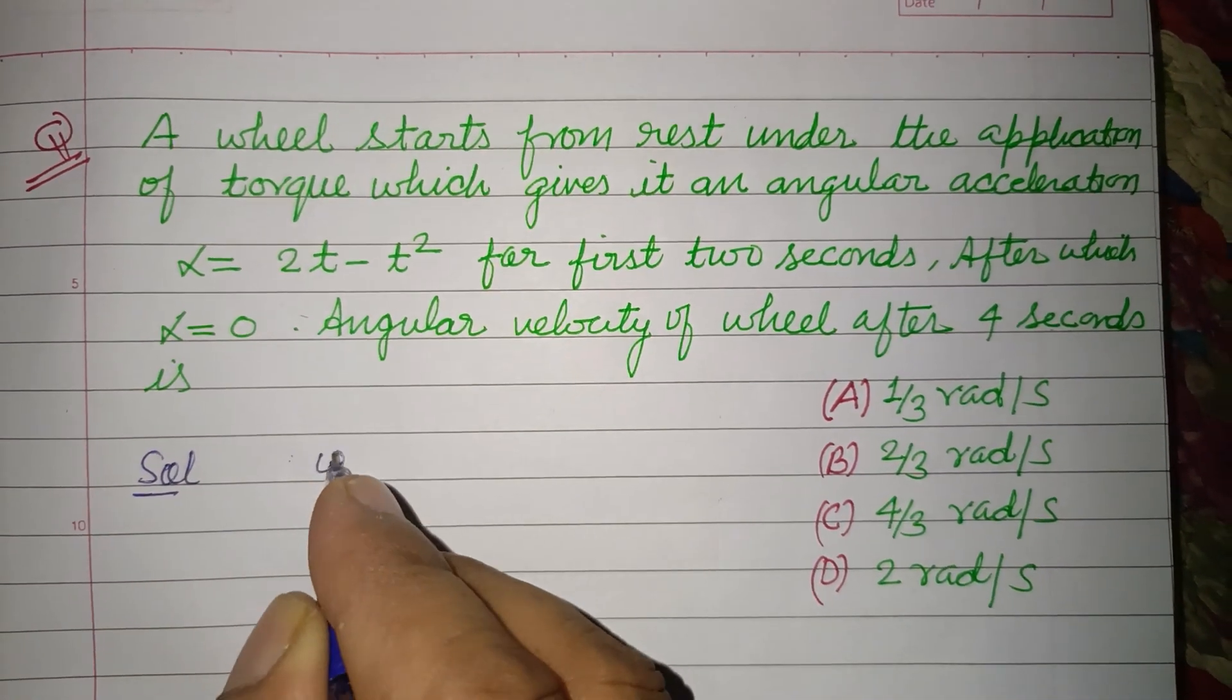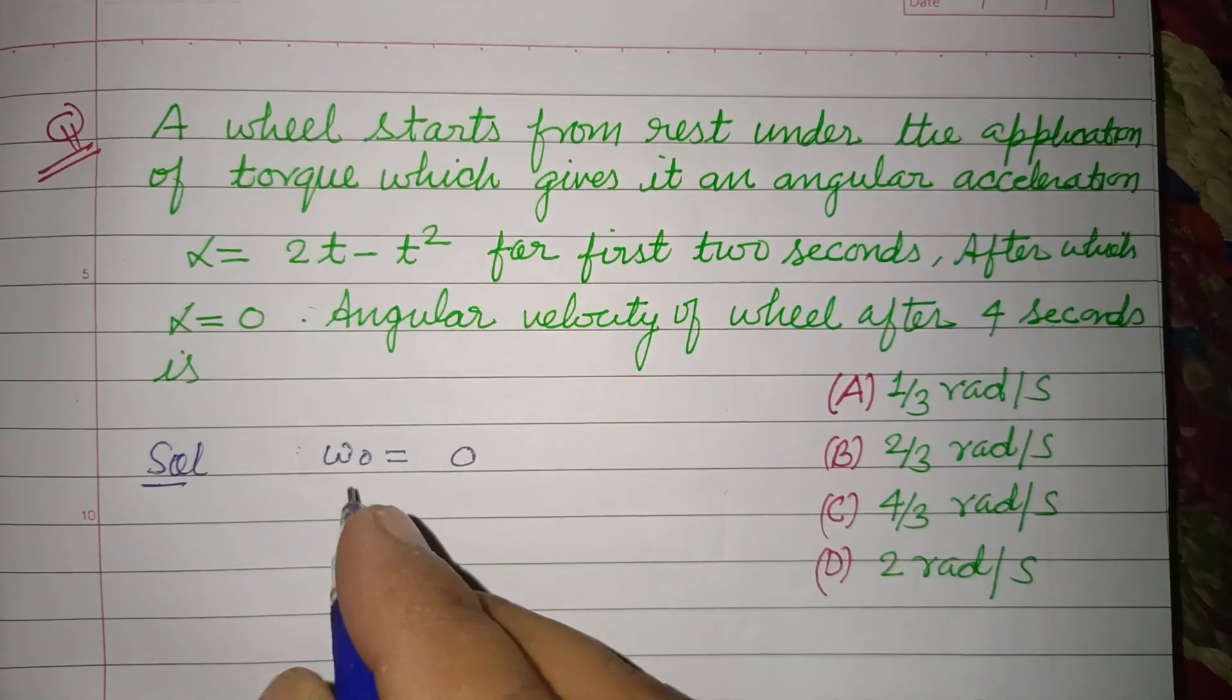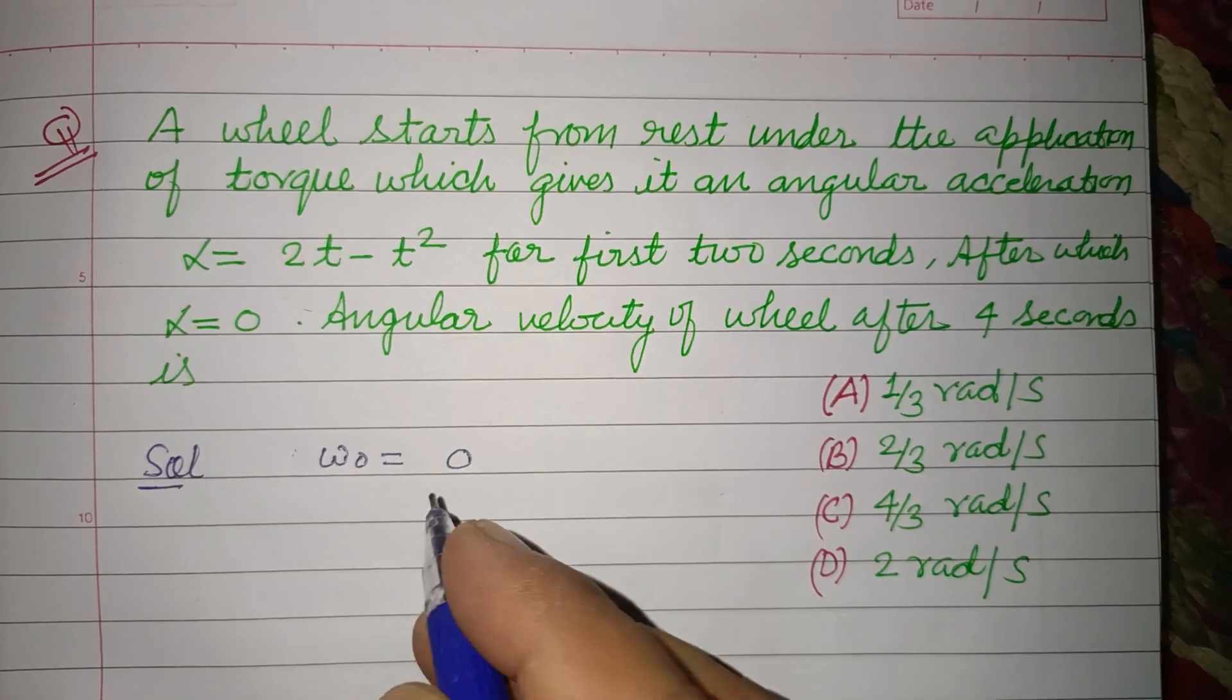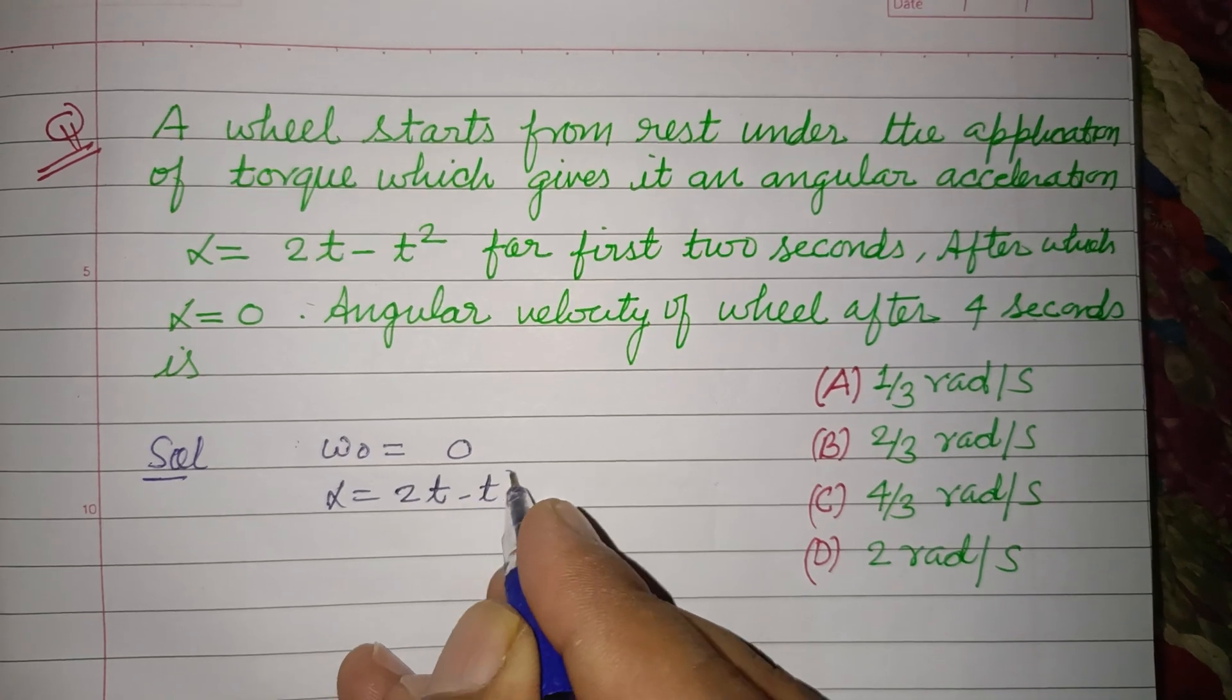So students, initially α₀ is given to us as zero, ω₀ is given to us as zero, and α = 2t - t².